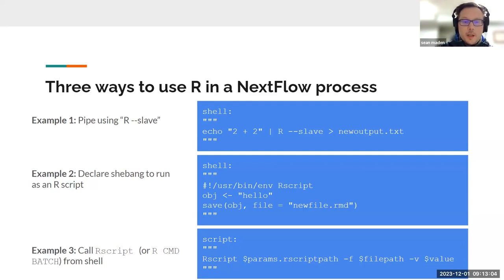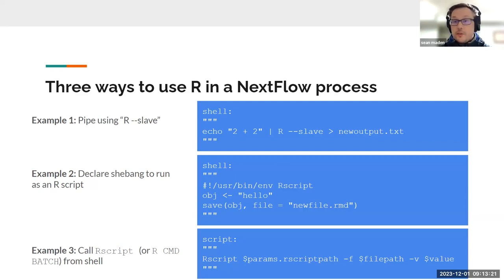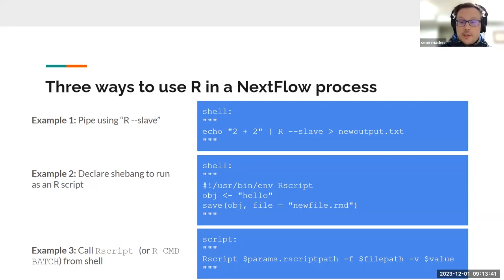In the third example, we use 'script' and call the Rscript software with three dollar-sign variables corresponding to Nextflow environment variables. Dollar-sign params.r_script_path is an R script path variable called from the workflow environment. The -f flag takes dollar-sign file_path — a variable from the channel — and the -v flag takes dollar-sign value, passing that variable to the R script.